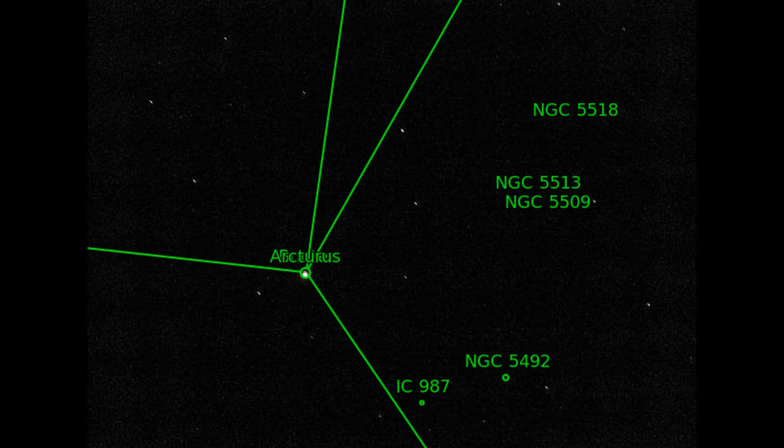The Boötes constellation has many double stars which are a favorite target for observation by many amateur astronomers.